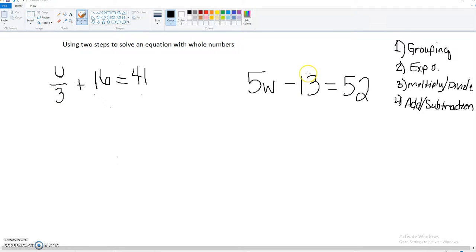Now, normally with order of operations, you go grouping symbols, exponents, multiply and divide, add and subtract. But when you're solving an equation, you need to go almost backwards with your order of operation. So you're going to be starting with addition and subtraction first.